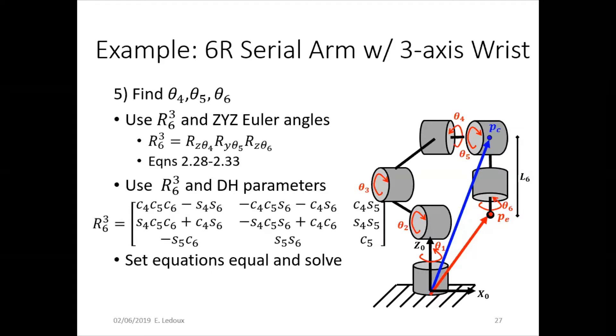And finally, for the last step, you need to get theta 4, 5, and 6. So you use that rotation matrix, R6,3, that you just found, and Z,Y,Z Euler angles. So this gets equations 228 and 233 in the book. Then R6,3, and the DH parameters you can use to get the final rotation matrix. So then you'll have to set these equations equal and solve. So the R3,6 with the DH parameters and the R3,6 with the Euler angles, you set those two matrices equal to each other, and then you can solve out.